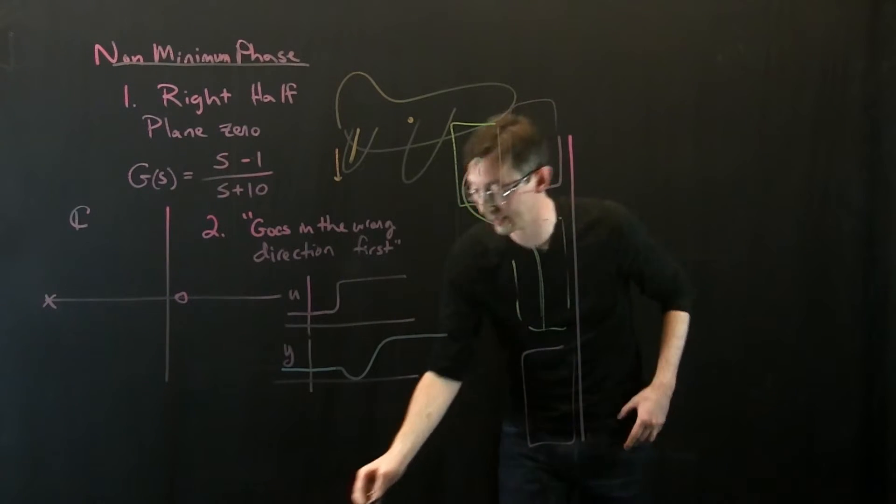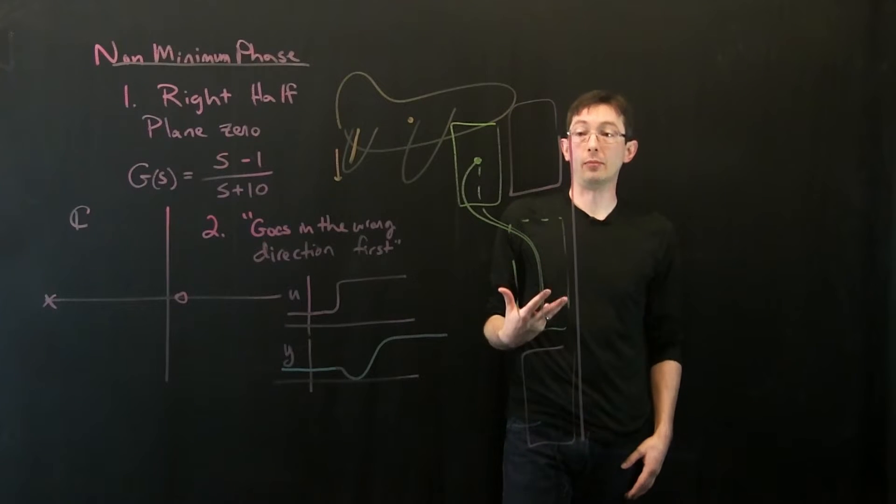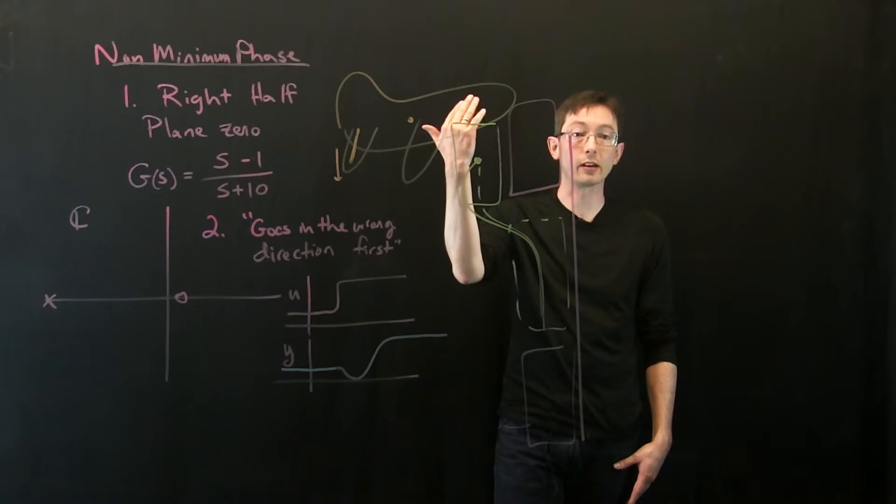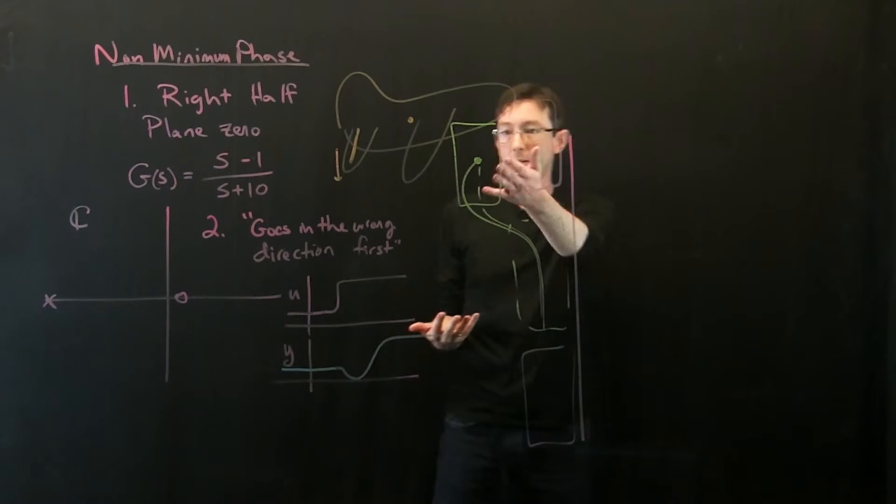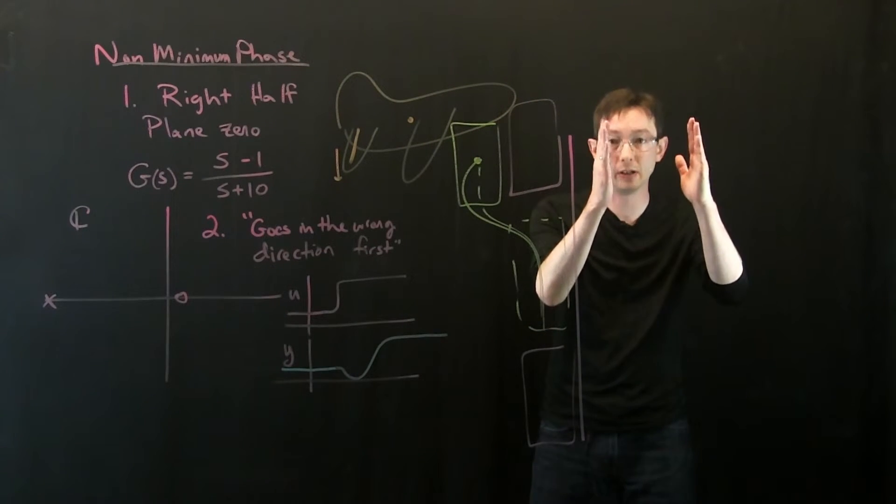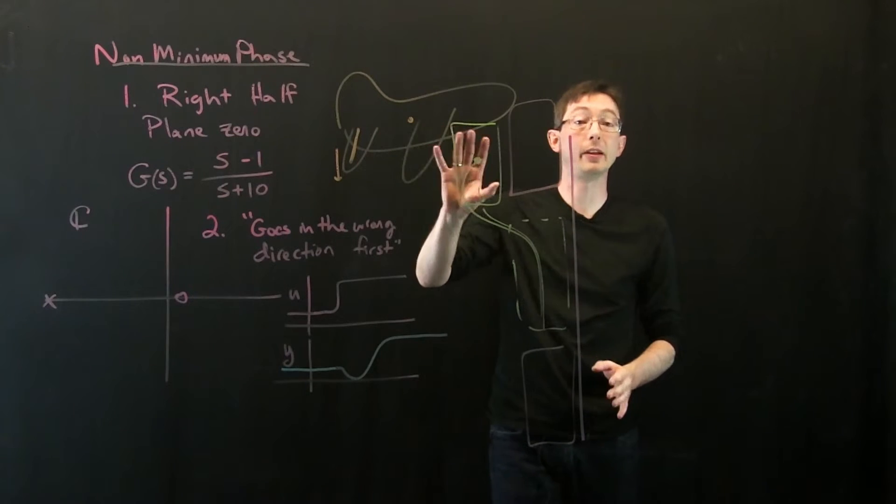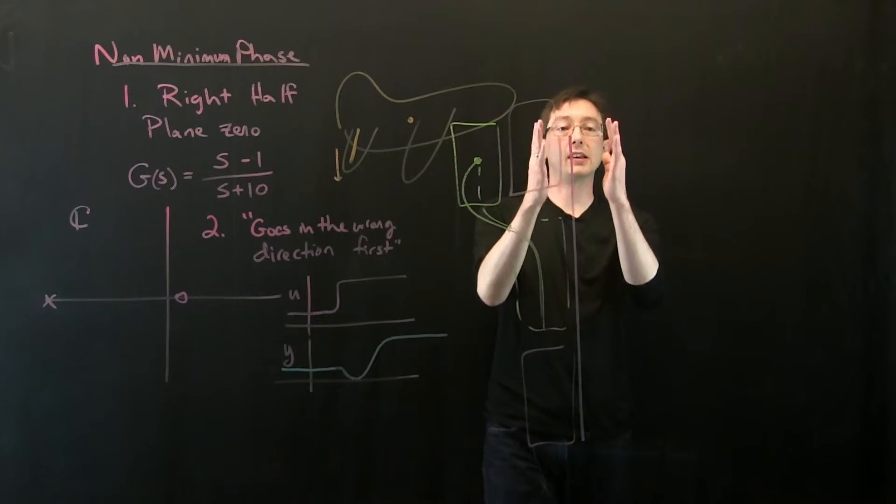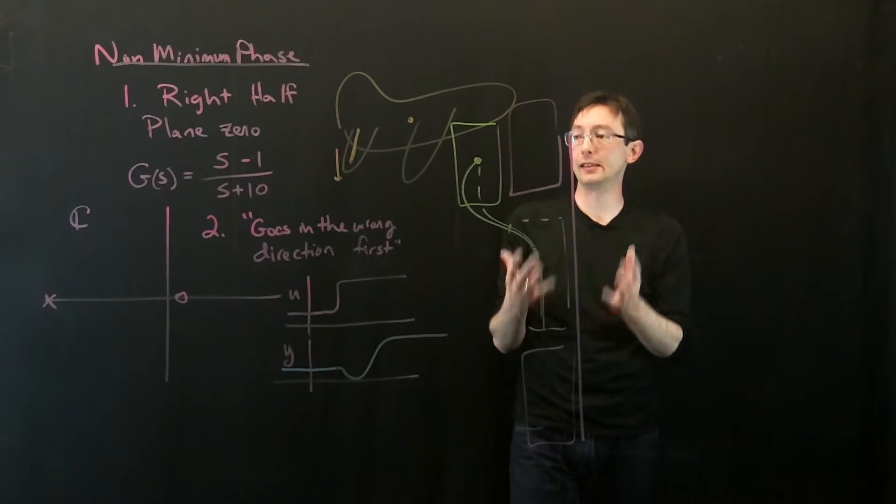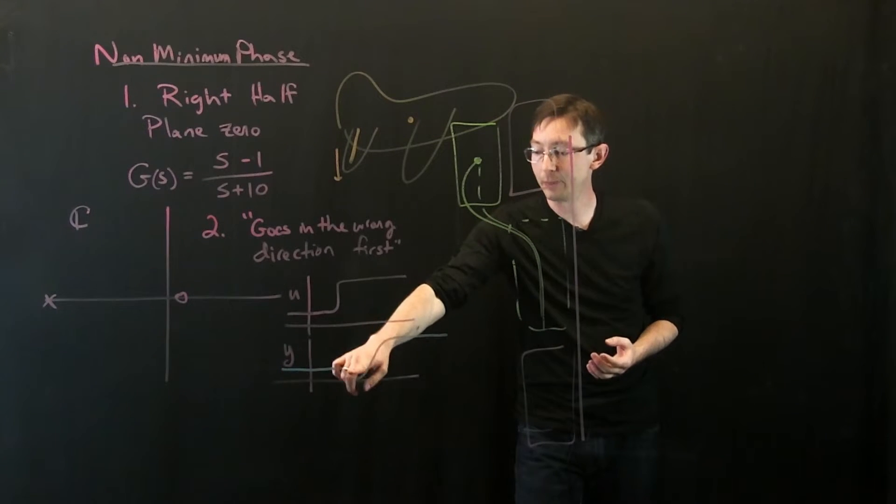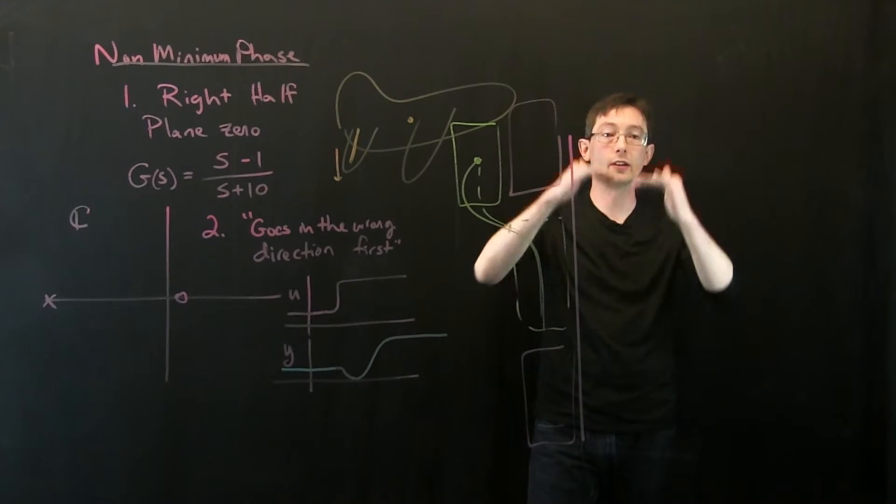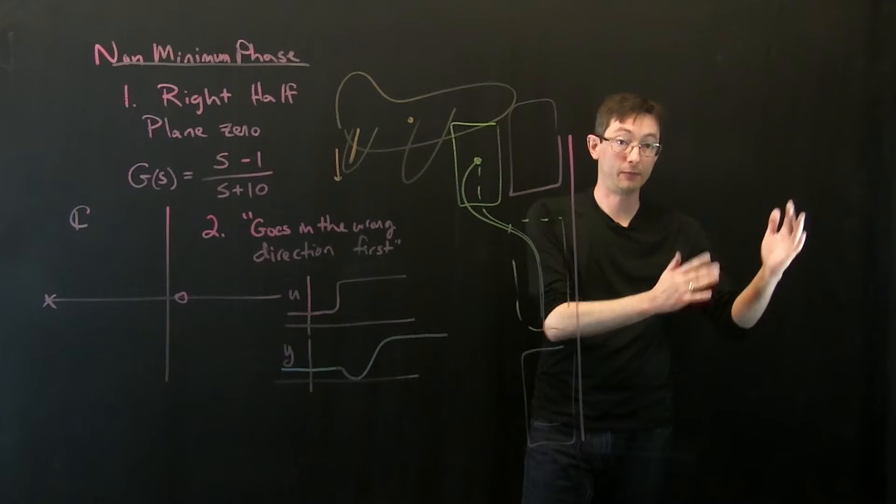So parallel parking is a non-minimum phase problem. And it's part of the reason why parallel parking is actually challenging, right? Like it's hard because you have to counter-intuitively move away before you come back in. Okay, so these are both non-minimum phase control problems because the system, the physics of the system forces it to dip in the wrong direction before you can achieve your goal of moving in the right direction.